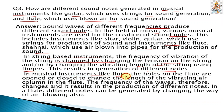In the case of musical instruments like flute, the holes of the flute are opened or closed to change the length of the vibrating air column in the flute. The frequency of the waves therefore changes, resulting in production of different notes. Different notes can also be generated in a flute by changing the way of air blowing.